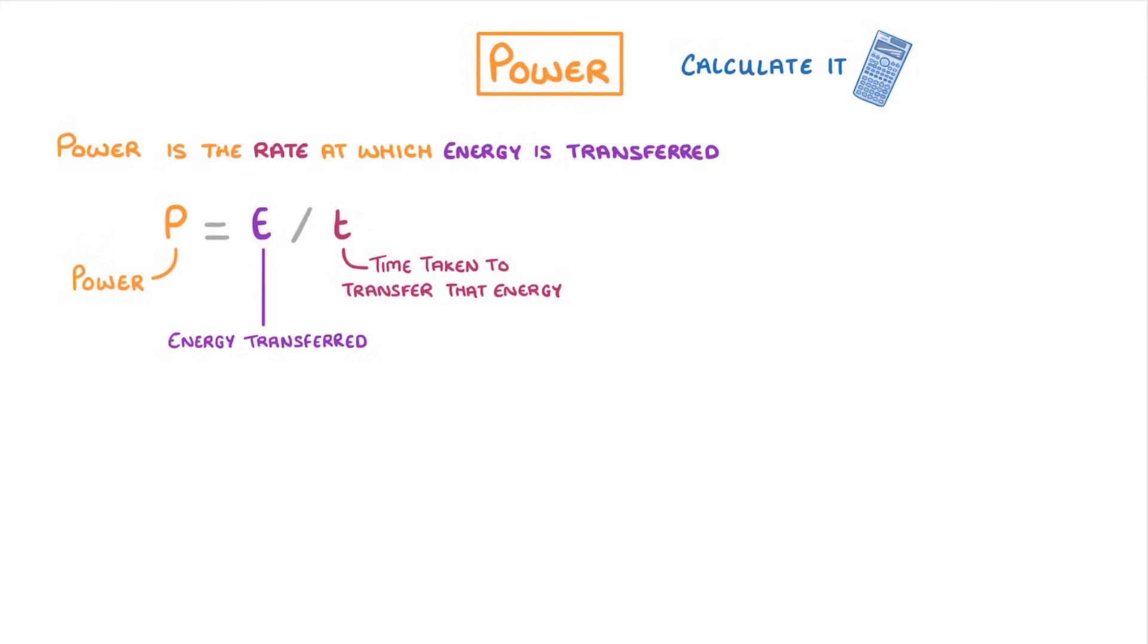The other definition is that power is the rate at which work is done, and this can be written as power equals work done over time.